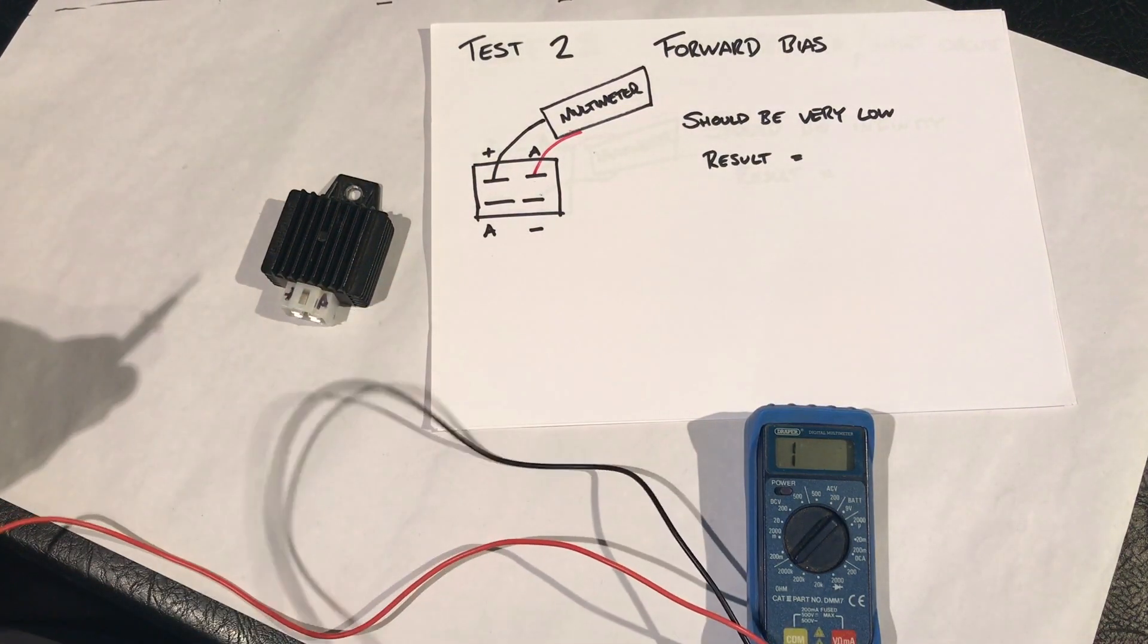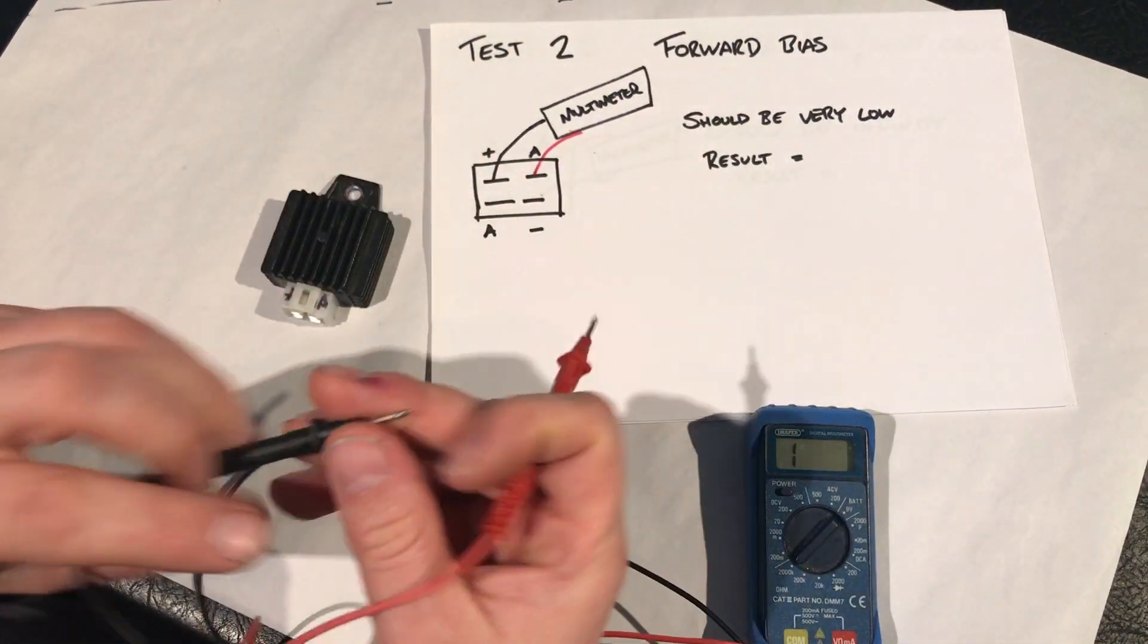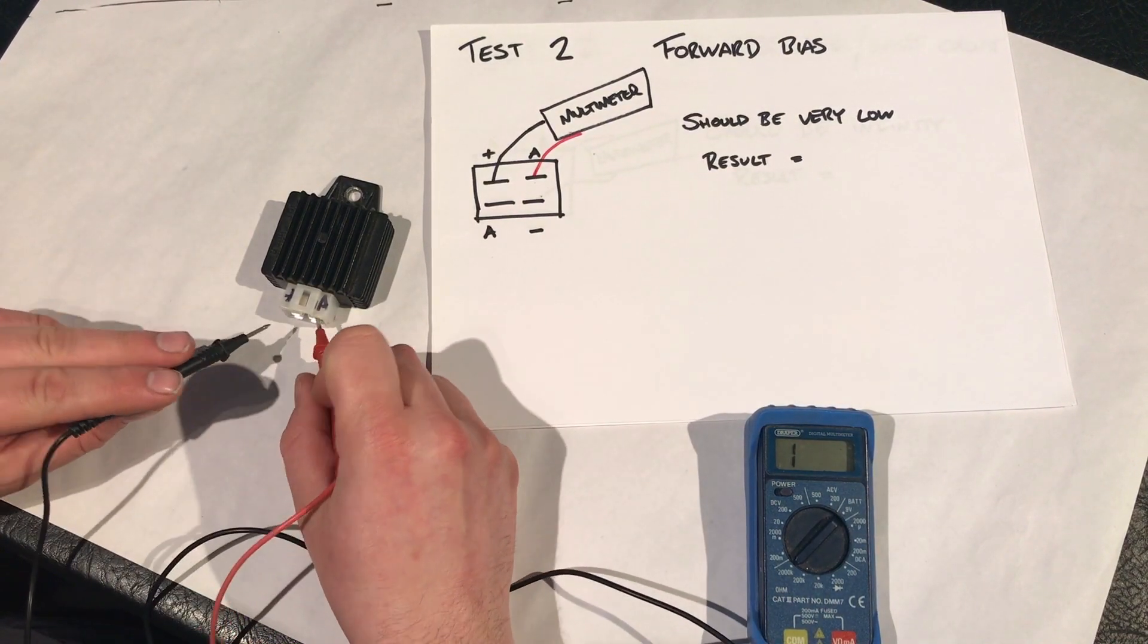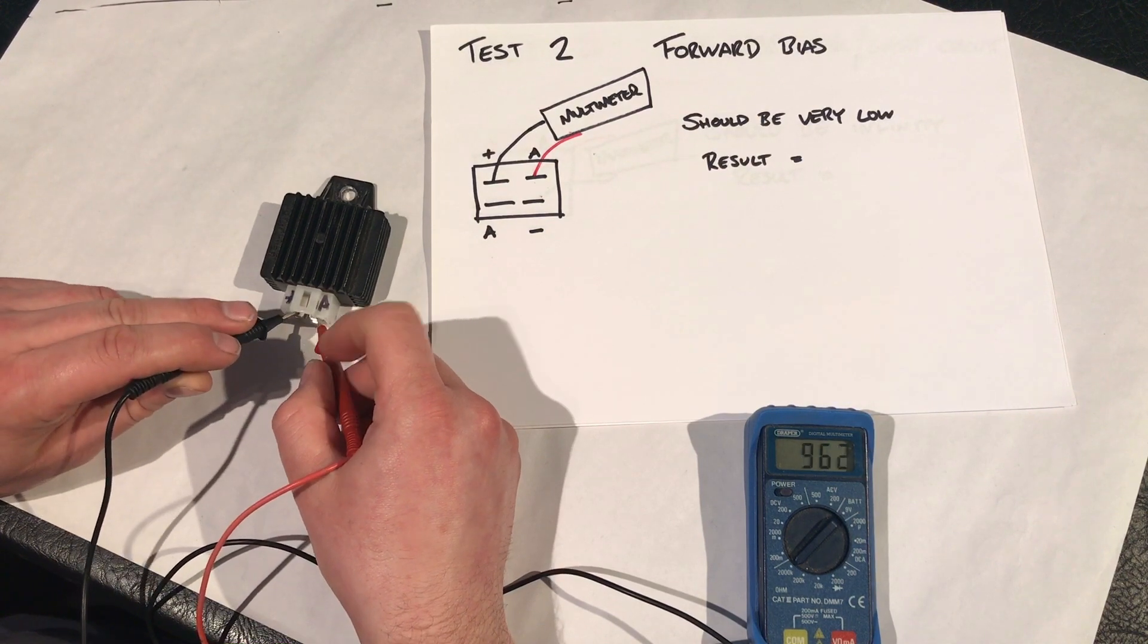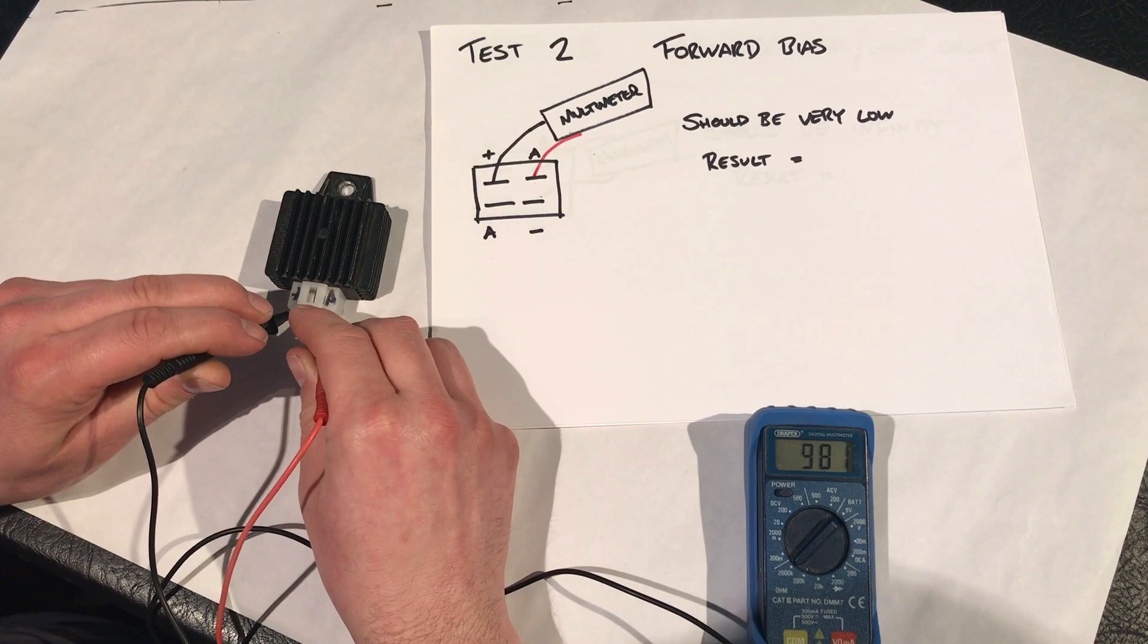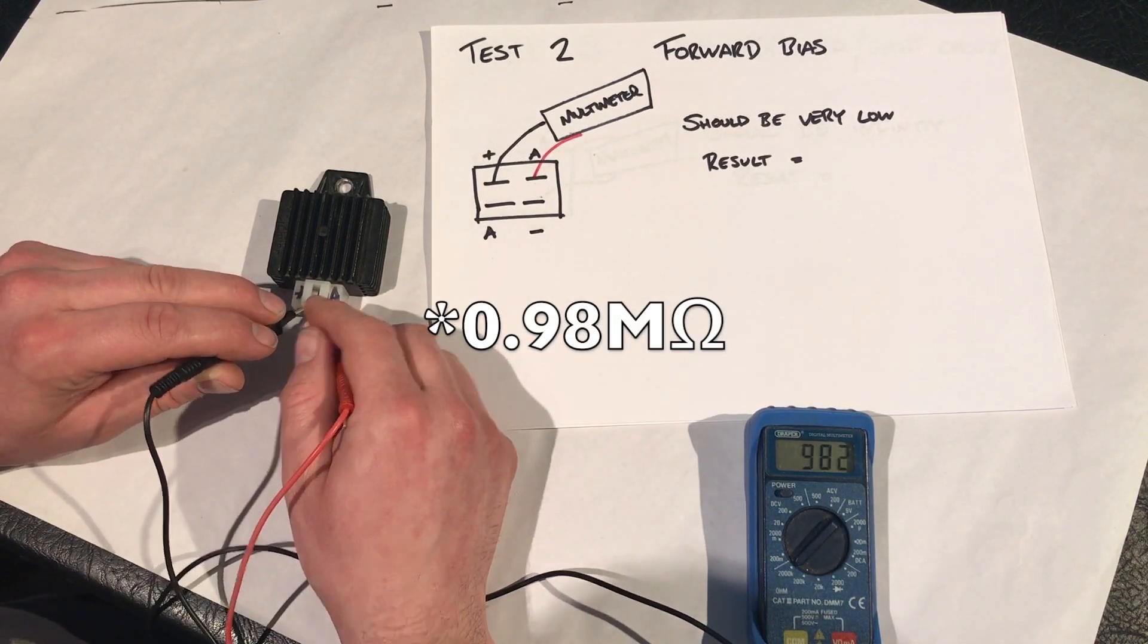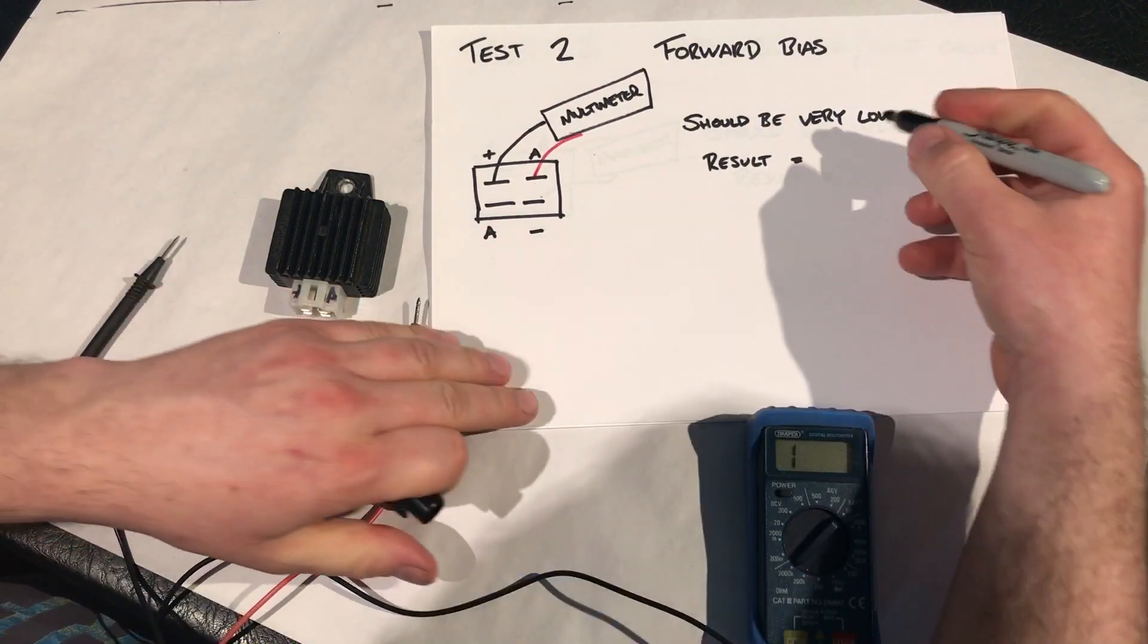So all we're looking for now is the forward bias. So it is basically the same test, but now we're pushing the power this way back into this. So positive will now go on the alternator, and the negative will now go on a battery positive terminal of the regulator. As you can see, the result is 980. I think that's 98 mega ohms.